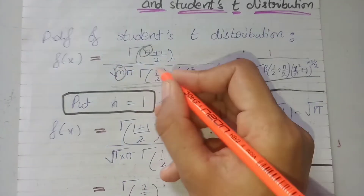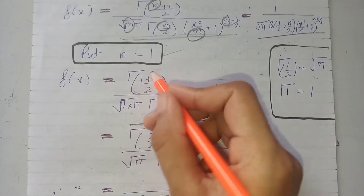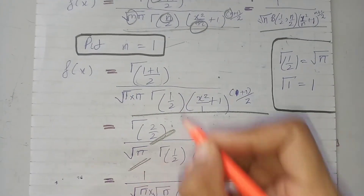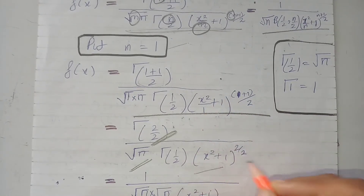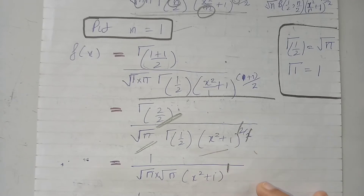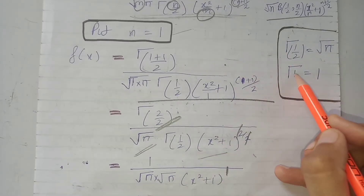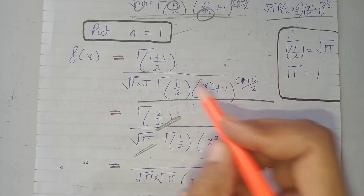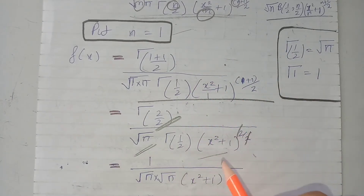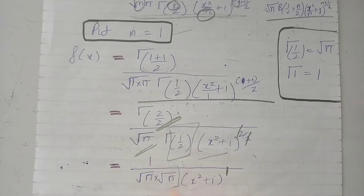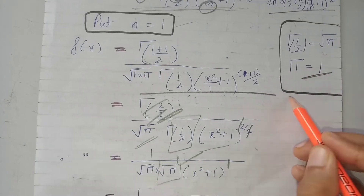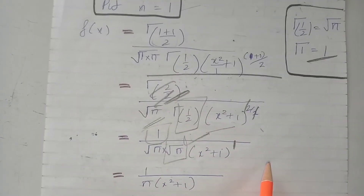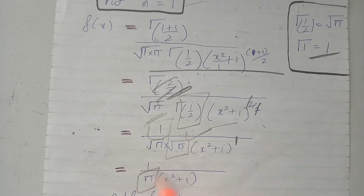Here, at the place of n we write 1. The whole term gives us 2 divided by 2, under root pi, and gamma(1/2). Here we get x squared plus 1 raised to the power 2/2, raised to power 1. We know that gamma(1/2) equals under root pi, so at the place of gamma(1/2) we write under root pi. We also know that gamma(1) equals 1, so under root pi multiplied by under root pi equals pi.